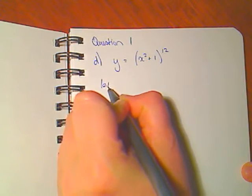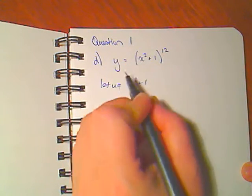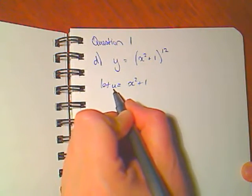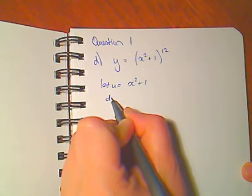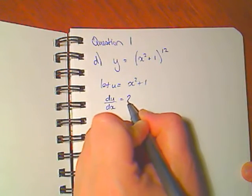To use the chain rule formally, I make a substitution, which is the piece in the middle. And I have called this u. I can then find the derivative of u with respect to x, du/dx. I use the power rule here as 2x.